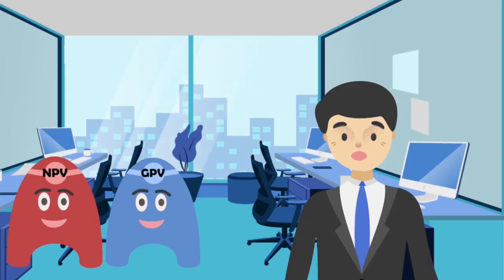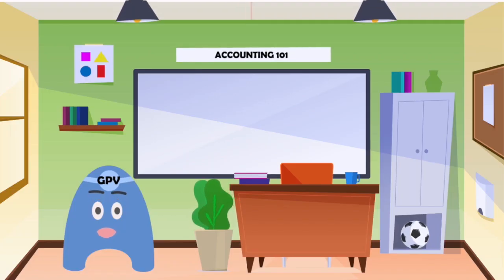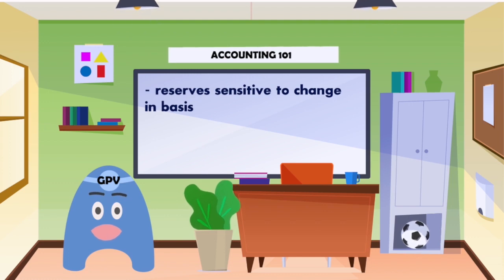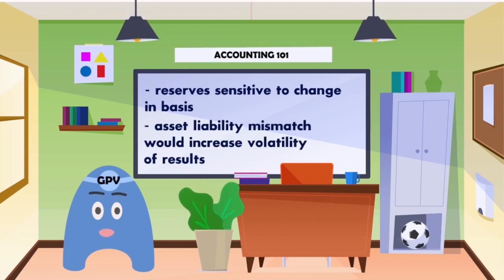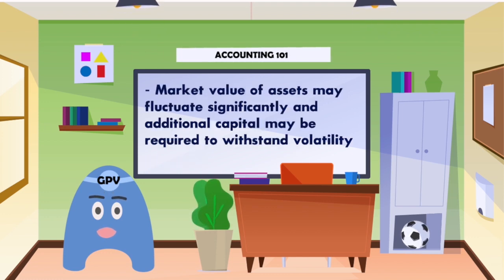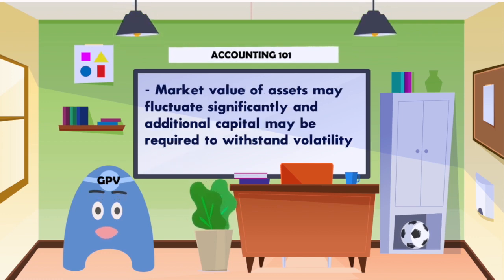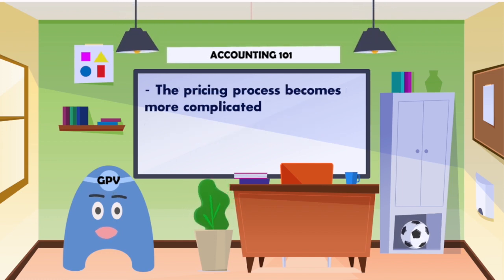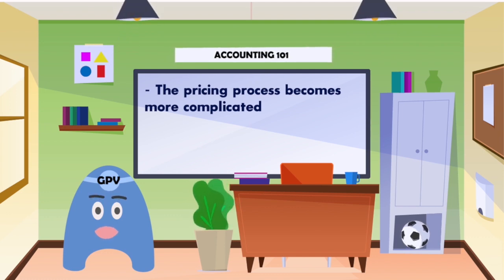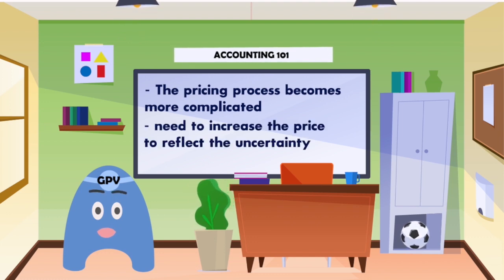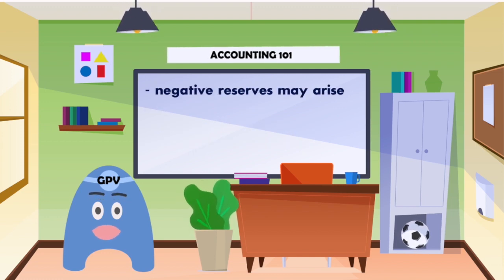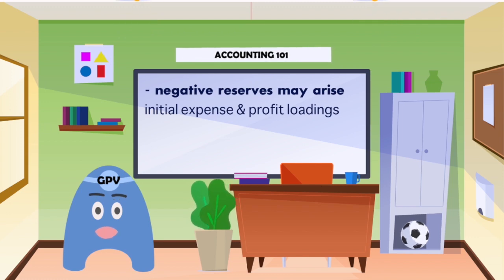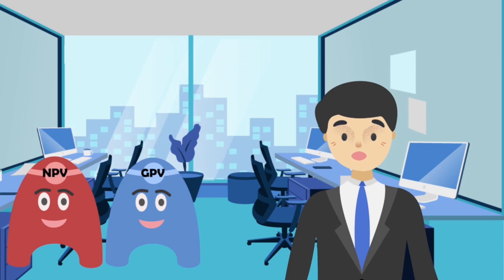What about GPV? What are your drawbacks? Using the GPV method, reserves are sensitive to changes in basis, as changes in reserving basis don't affect office premiums. Any asset-liability mismatch would increase volatility of results. Market value of assets may fluctuate significantly, and additional capital may be required to withstand volatility. The pricing process becomes more complicated as people need to form a view of future market prices, and companies may need to increase the price to reflect uncertainty. Negative reserves may also arise during initial policy durations because of initial expense and profit loadings in office premium. Now I finally understand NPV and GPV — but tell me, which method should we use?